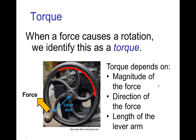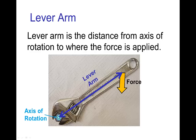The magnitude of a torque depends on the magnitude of the force, also the direction of that force, and finally the length of the lever arm. The lever arm is the distance between the axis of rotation — so the point about which the rotation is occurring. Here, for this wrench turning a nut, if the force is applied at a point on the handle, then the distance between the axis of rotation and where the force is applied is called the lever arm.